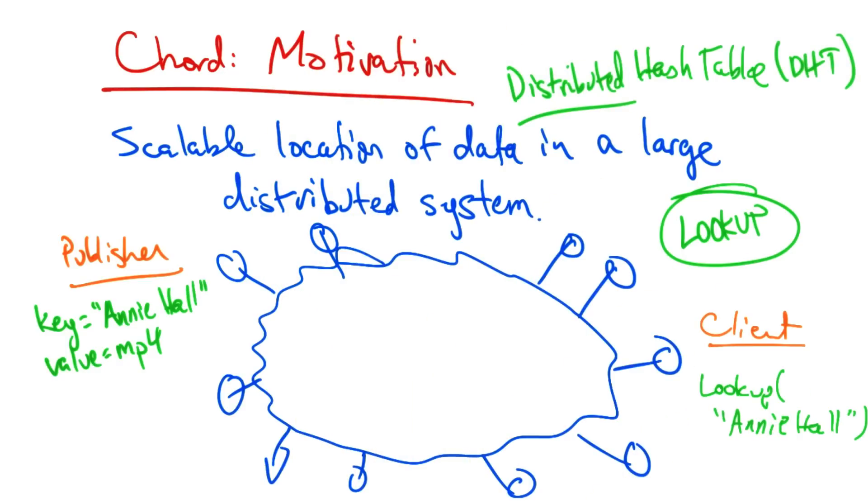So what we're trying to build is what's called a distributed hash table, or a DHT. The way that we're going to build this is using a mechanism called consistent hashing.